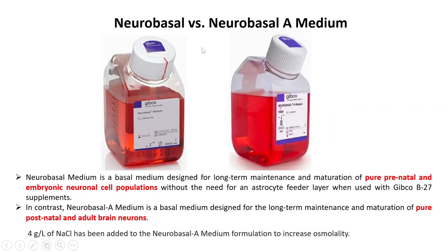We will discuss the importance of the media we are choosing. With respect to our media, we have discussed two mediums: the neurobasal medium and the neurobasal A medium. Neurobasal medium is a basal medium designed for the maintenance and survival of pure prenatal and embryonic neuronal cell populations along with Gibco B27 supplement. Neurobasal A medium is designed for the maintenance and survival of pure postnatal and adult brain neurons. It differs from neurobasal medium in having 4 g per litre of sodium chloride, which helps to increase its osmolarity, required for the growth of adult and postnatal brain neurons.